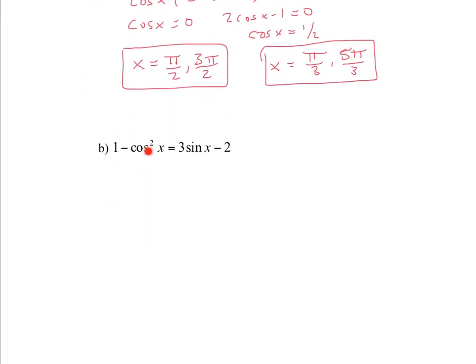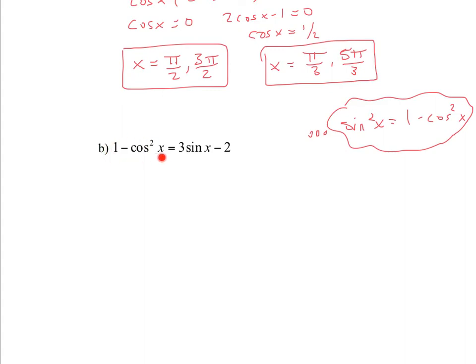Next one: notice that we have cos squared here and sin x. That's not a good situation because you can't factor cos and sin in the same equation. But we do have an identity for cos squared x that we can replace with sin. From your Pythagorean identities, we know that sin squared x equals 1 minus cos squared x. Notice we have 1 minus cos squared x right here, and that value can be replaced with sin squared x. Since I already have sin in my equation, I'd like sin everywhere. So I'm going to replace this with sin squared x, giving sin squared x equals 3 sin x minus 2.